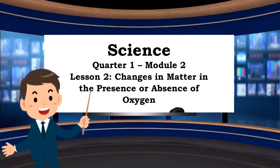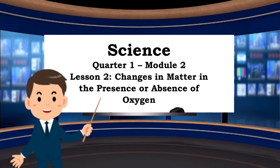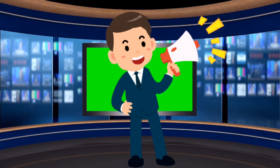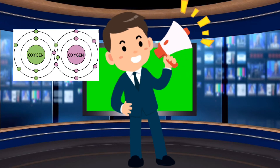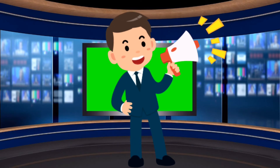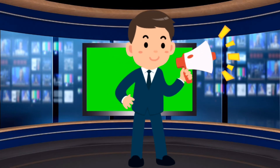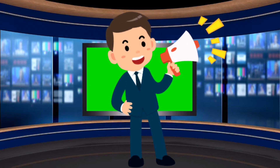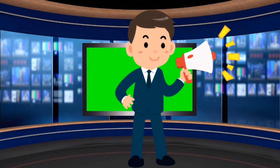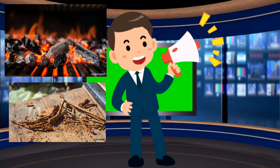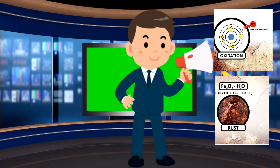Good day. Our Module 2, Lesson 2 for Science 5 is 'Changes in Matter in the Presence or Absence of Oxygen.' Did you know that oxygen forms stable chemical bonds with almost all elements to give the corresponding oxide? Oxygen is a very reactive gas — it has the ability to combine with many materials to form oxides. When it combines with non-metals, it produces a non-metallic oxide. The presence or absence of oxygen has various effects on matter, among these are combustion and rusting.